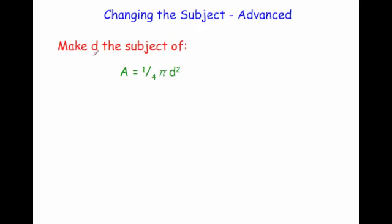Make d the subject of a equals a quarter pi d squared. In a question like this, because we've got a fraction, times through by 4 to get rid of the quarter. If you've got a fraction, choose a suitable number to multiply through by. We want to get rid of the quarter, the pi, and the squared on this side, just to leave d.